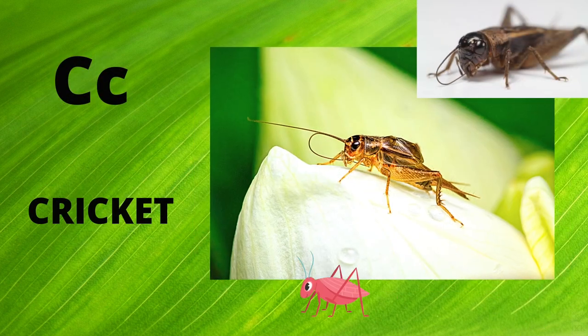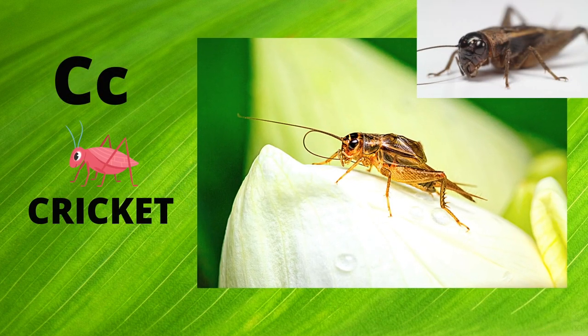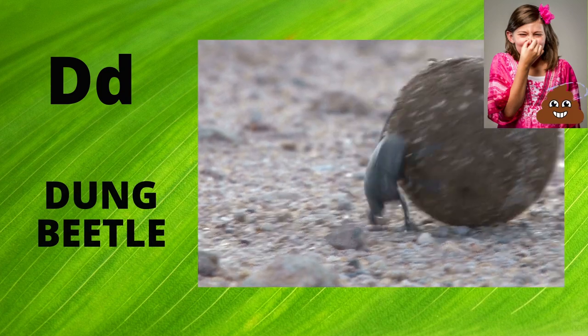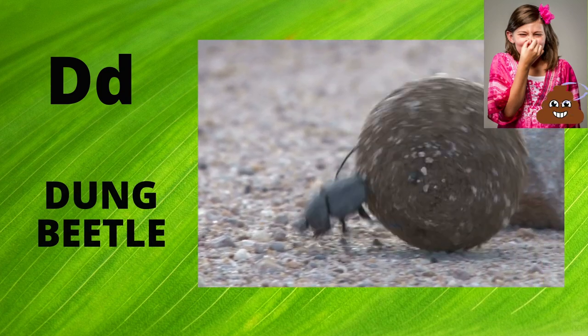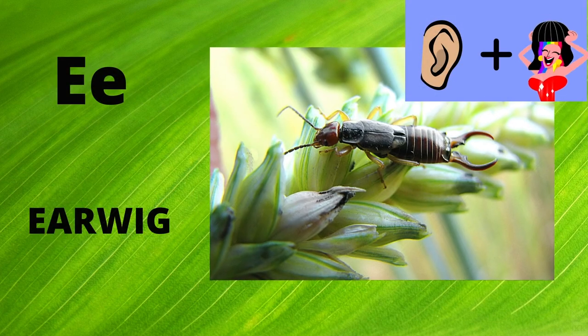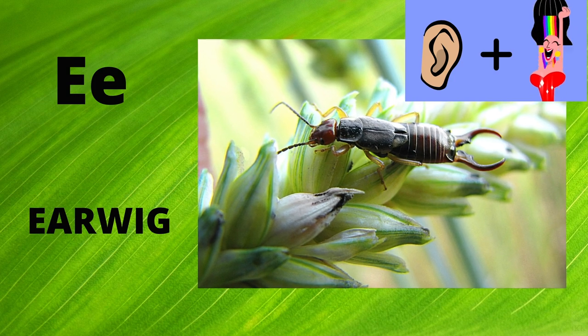C is for Cricket. Cricket. D is for Dung Beetle. Dung Beetle. E is for Earwig. Earwig.